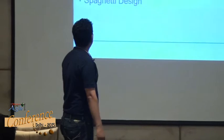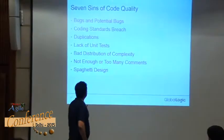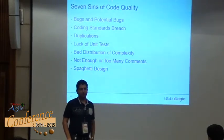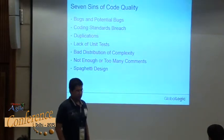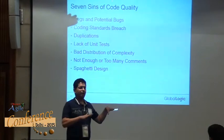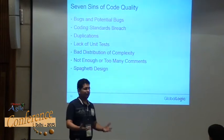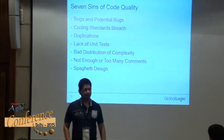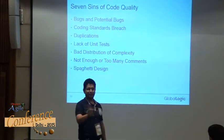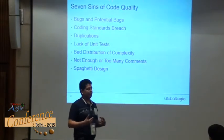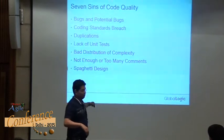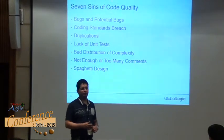The first deadly sin is bugs and potential bugs, which can happen because of your code quality as you have seen in the first example. Then there are coding standard breaches — because of standard breaches, consistent coding is not there; at one time you are using camel case and somewhere else you are using something different. Duplication — why is duplication a problem? For one change, you have to make the same change in two places. As you start making further changes, if you make a change in one place you have to make it in different places as well. So try to use the DRY principle — don't repeat yourself.